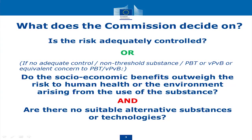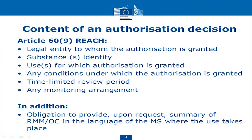So what is the crux — the key element on which the Commission decides? Of course, this is not new. It comes already from the RAC and the SEAC in the opinions. The first question is: is the risk adequately controlled? Or if it is not adequately controlled, or it is a non-threshold substance, or it is a PBT or vPvB, or an equivalent concern to those PBTs and vPvBs, then the question is: do the socioeconomic benefits outweigh the risk to human health or the environment arising from the use? And in that second route, are there no suitable alternative substances or technologies?